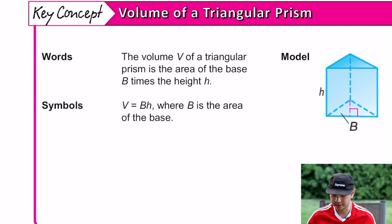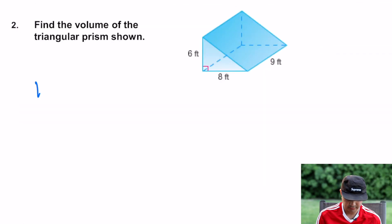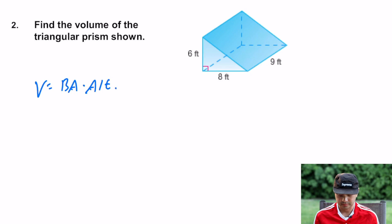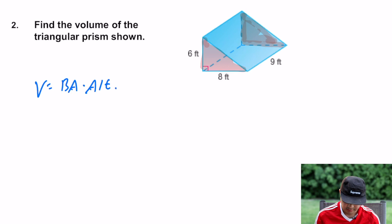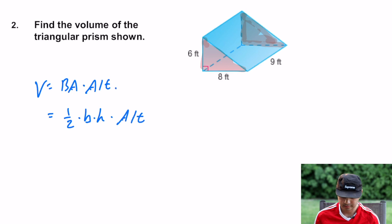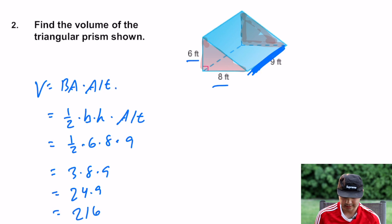Let's move on to a triangular prism. Volume equals base area times altitude, so the area of the triangle times how far apart the triangles are. Here we find the volume: volume equals one half base times height times the altitude. The base and height of the triangle are perpendicular — six and eight. So one half times six times eight, then times the altitude — the triangles are nine feet apart — gives you 216 cubic feet.